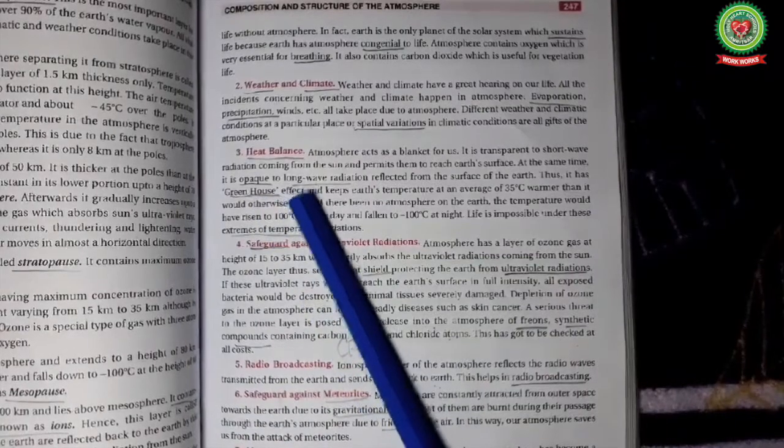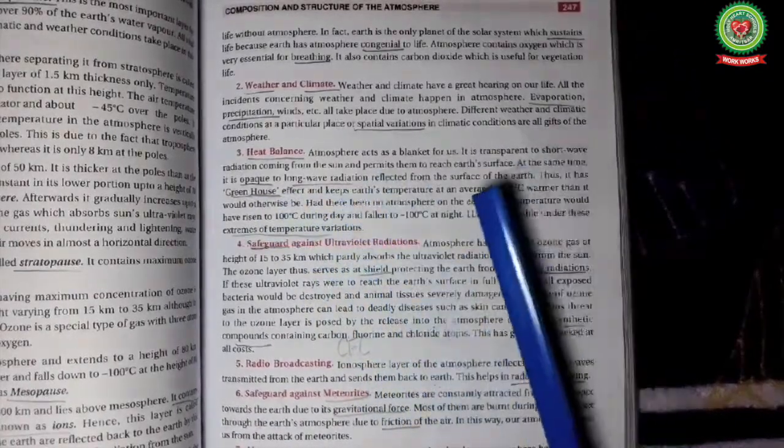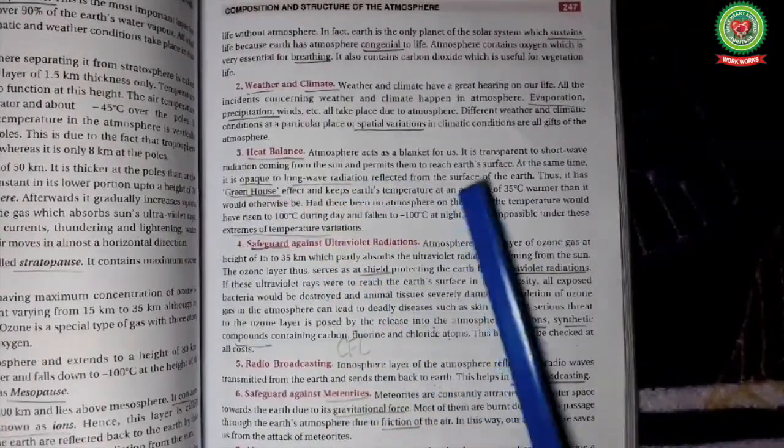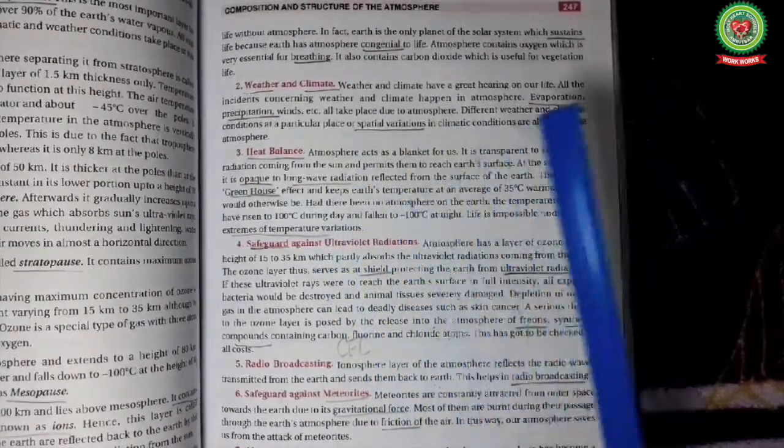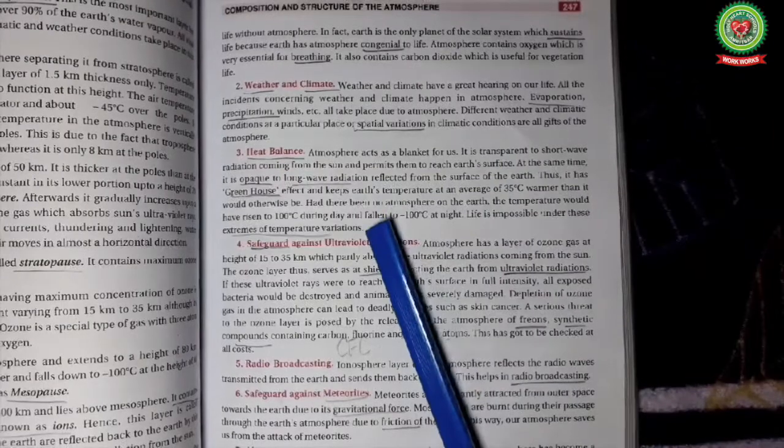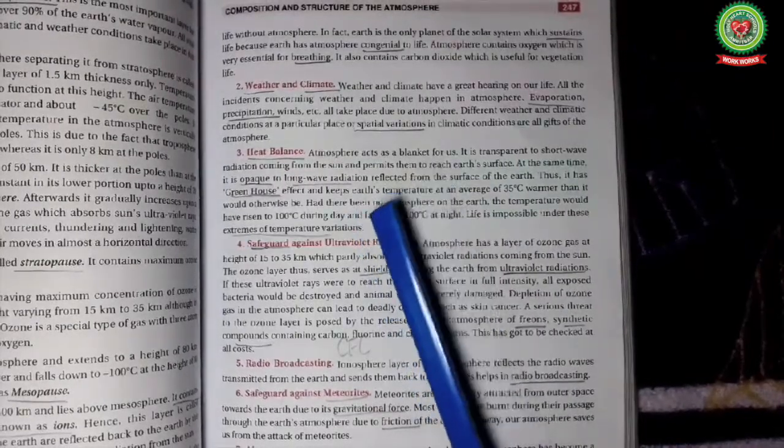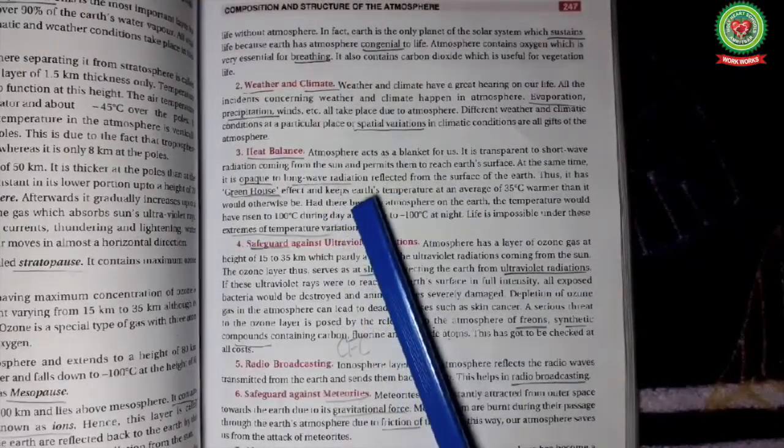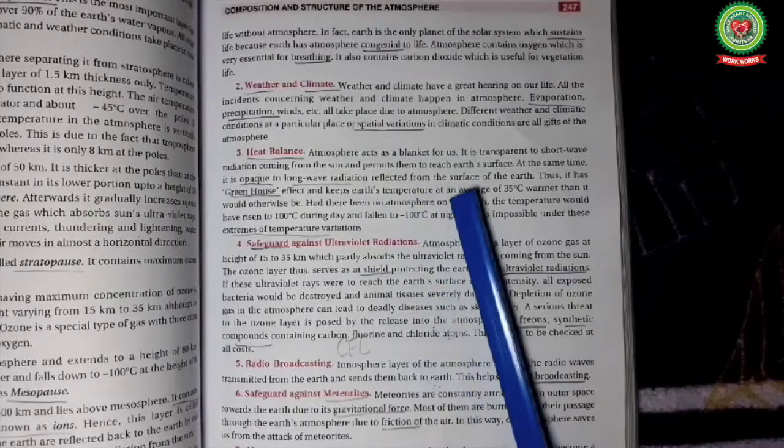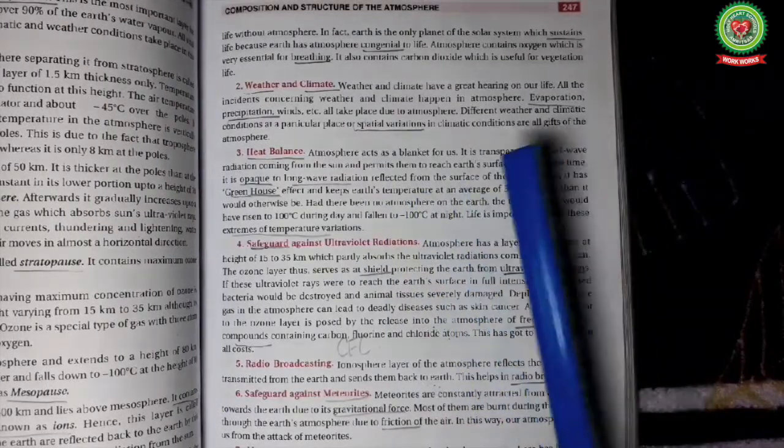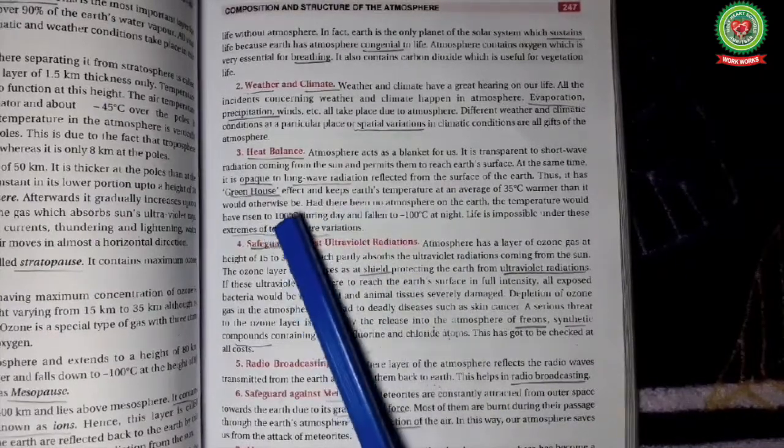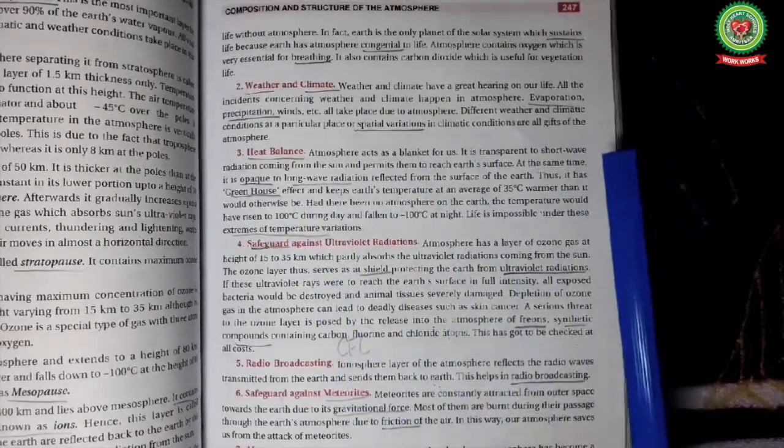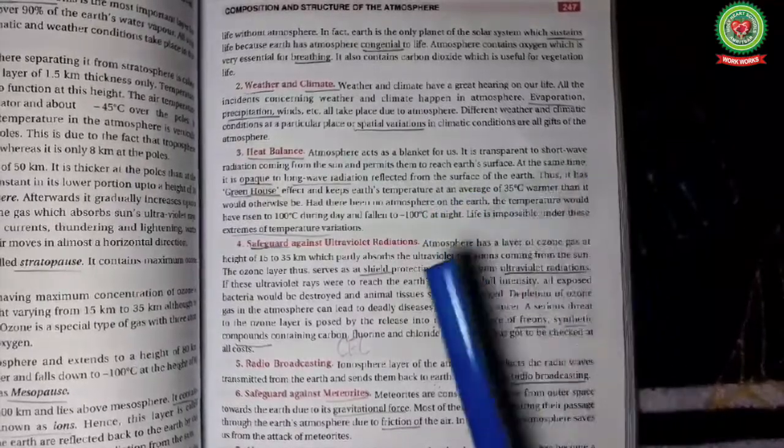Heat balance: atmosphere acts as a blanket for us. Atmosphere absorbs the radiation that is coming from the sun during daytime. It also absorbs the long wave radiation which is reflected from the earth's surface at night, thus it keeps the earth warm, which is also called as greenhouse effect. It is mainly due to the gases like carbon dioxide and methane.